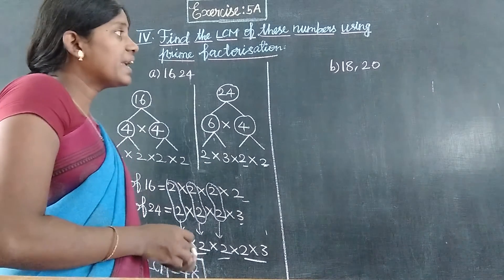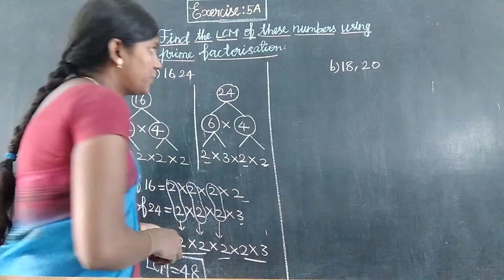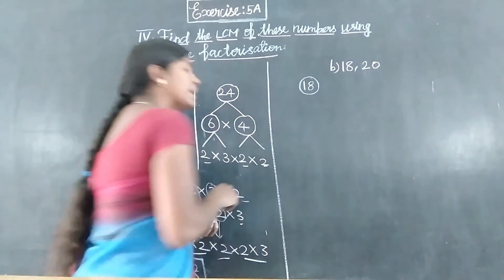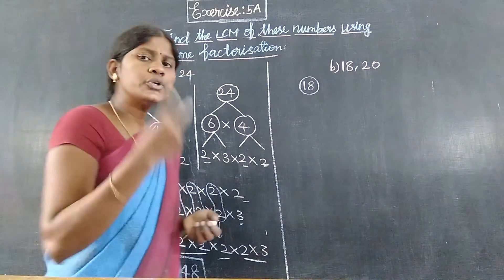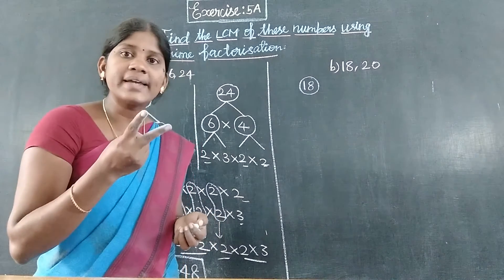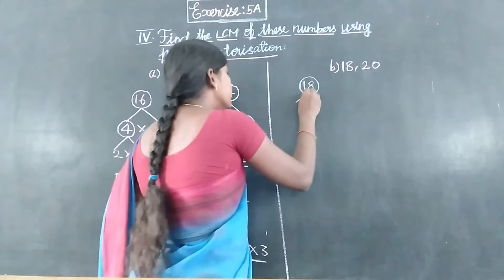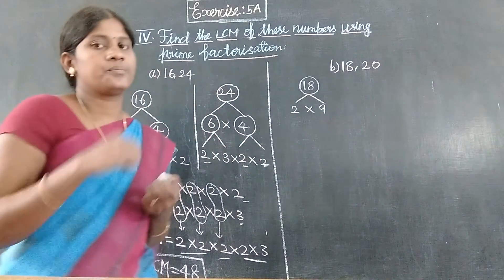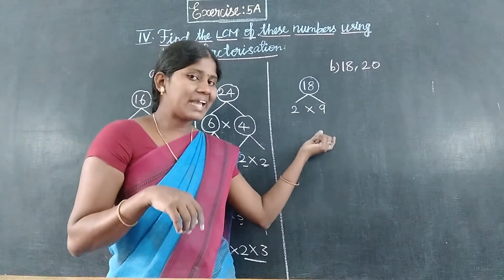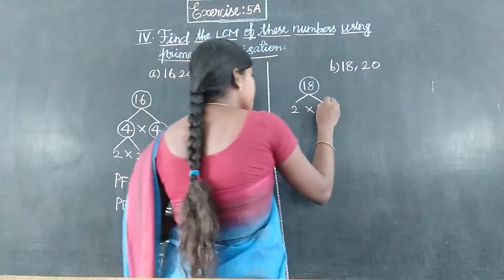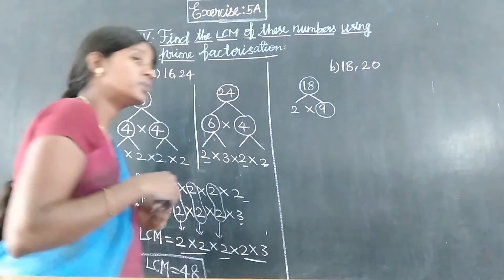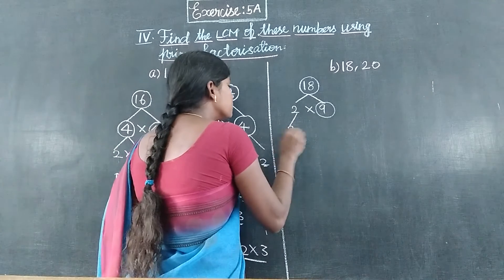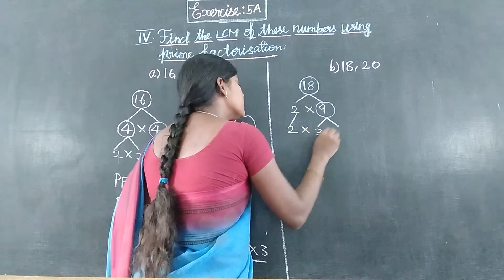Next, we find the LCM of 18 and 20. We break 18 first. Two nines are 18. Two is a prime number, but 9 is a composite number. So we circle 2 and break 9 further. Three threes are 9.